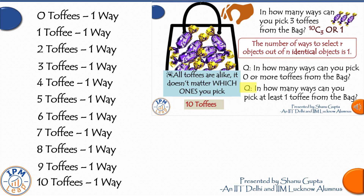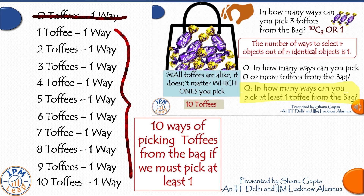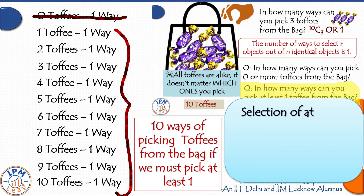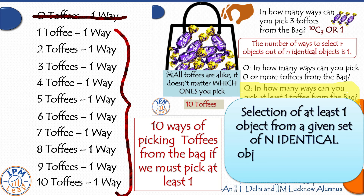What if you must pick at least one toffee? The case of zero toffees is now ruled out. You can pick any number from 1 to 10 — one way for each case — giving 10 total ways. The general rule is: selection of at least one object from a set of n identical objects can be done in n ways.